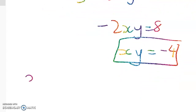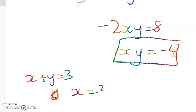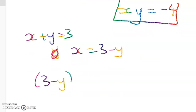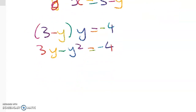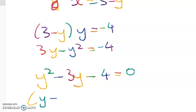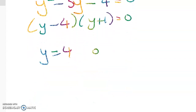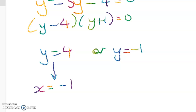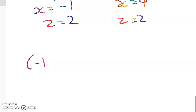We can now substitute. We know x + y = 3, so x = 3 − y. Then (3 − y) · y = −4, giving 3y − y² = −4, or y² − 3y − 4 = 0. Factorizing: (y − 4)(y + 1) = 0, so y = 4 or y = −1. Since x + y = 3, x = −1 or x = 4 respectively. In both cases z = 2, giving two solutions: (−1, 4, 2) or (4, −1, 2).